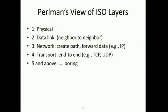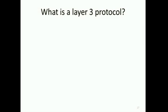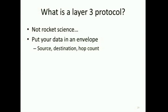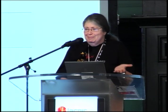That's why I call it Perlman's layers. A layer 3 protocol is not rocket science — you put your data in an envelope with a source, destination, and hop count. The reason for the hop count is that in a distributed algorithm, if the topology is changing, packets may loop. So you count hops and eventually discard the packet. That's basically what IPv4 looked like, and what IPv6 looks like — the size of the address has changed.